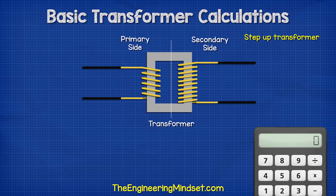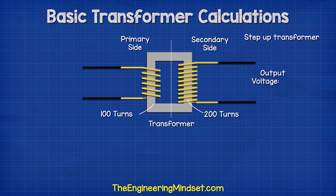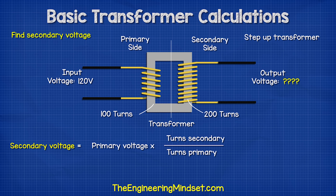Let's now consider some step-up transformer examples. If we had 100 turns on the primary and 200 on the secondary, and we supplied it with 120 volts, what voltage would we see on the secondary? We can use this formula to find that out, and we see the answer is 240 volts. So this is therefore a step-up transformer.